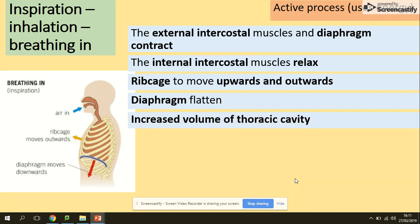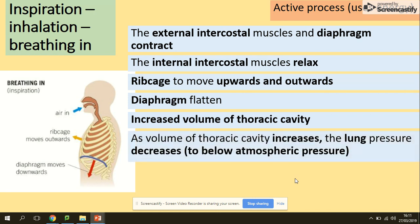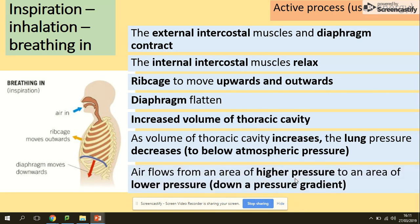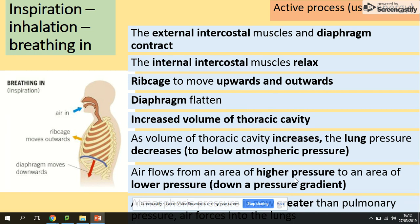The volume of the thoracic cavity increases because air is being drawn in. As volume increases, pressure decreases — they always work in opposite directions. Because of that, air flows from higher pressure to lower pressure, down the pressure gradient. The atmospheric pressure is now higher than pulmonary pressure, so air is forced into the lungs.